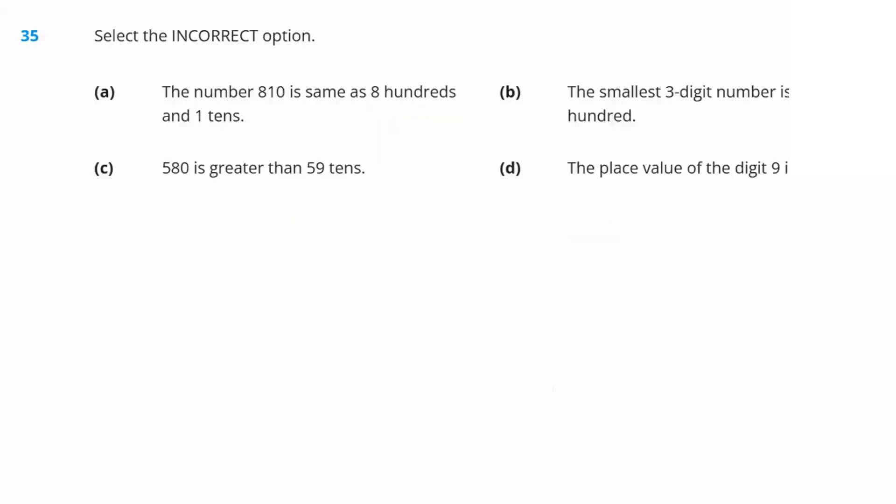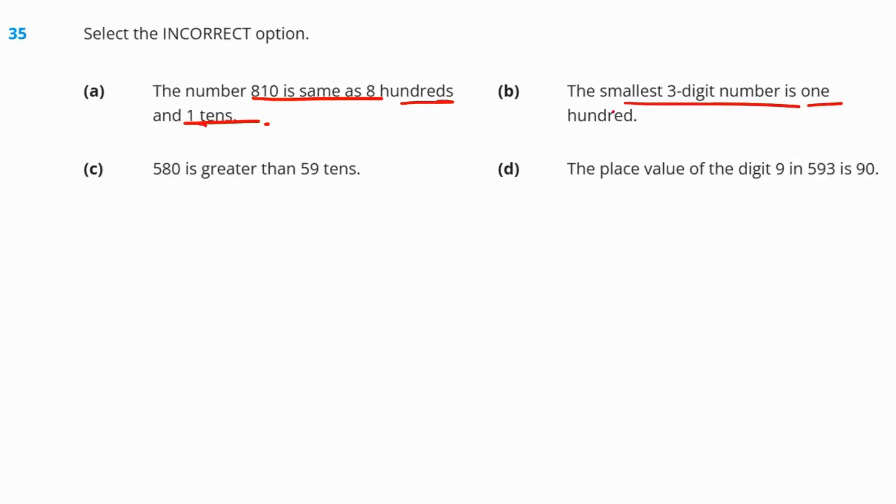Next, question number 35 wants you to find out the incorrect option. The number 810 is same as eight hundreds and one tenth. Correct? The smallest three digit number is 100. That's also correct. 580 is greater than 59 tenths. 59 tenths means 590. No. That's incorrect. Hence, that's our required answer.